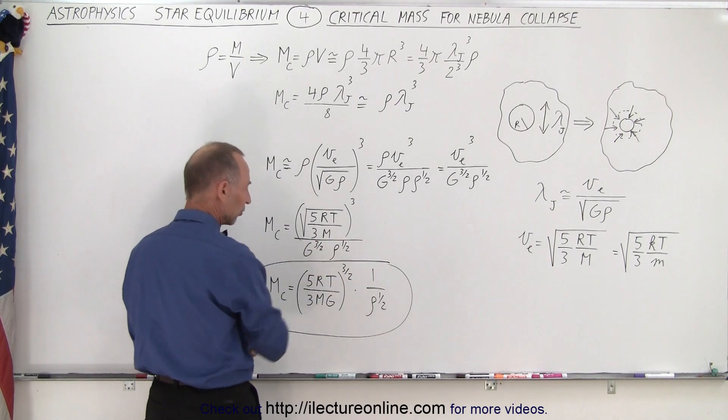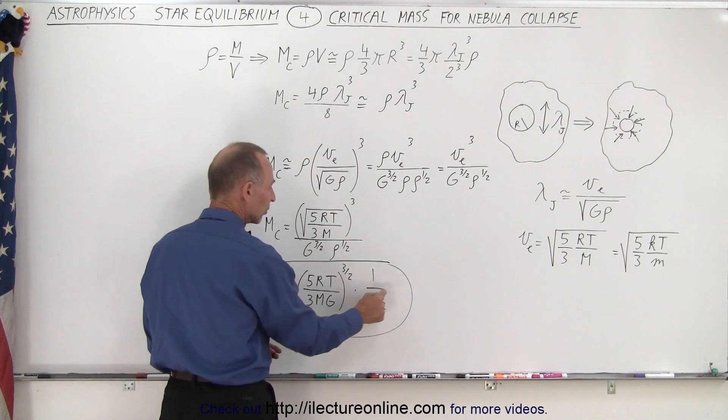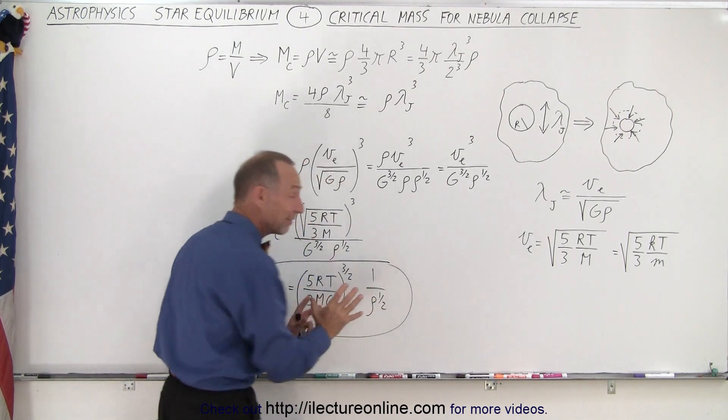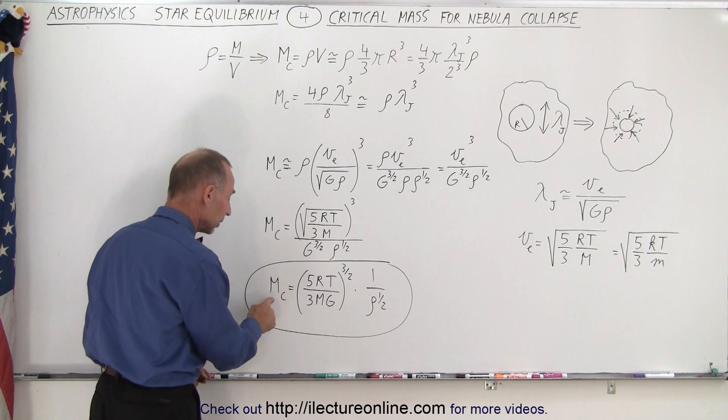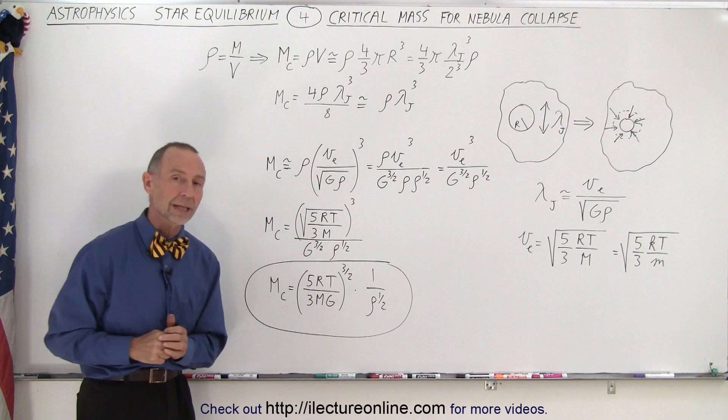We can include G because that's also the 3/2 power. And then we still have 1 over the density to the 1/2 power. And now we have a nice neat equation describing the minimum mass, the critical mass required for gravitational collapse.